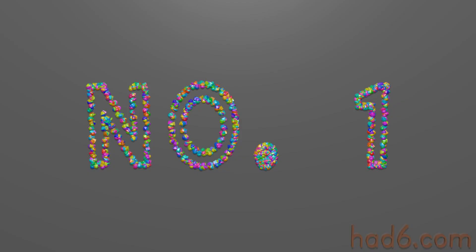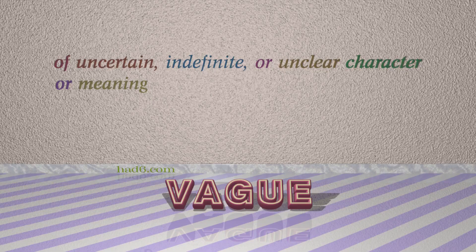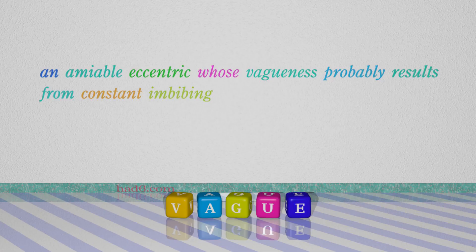Number 1: Vague, which means of uncertain, indefinite, or unclear character or meaning. For example: An amiable eccentric whose vagueness probably results from constant imbibing.